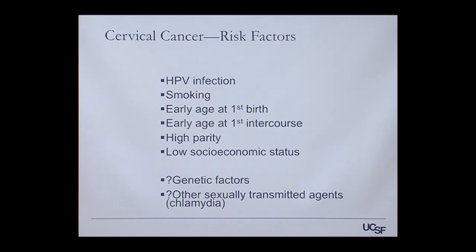High parity — the number of babies you've had — is a risk factor: women who've had four or more babies are significantly more likely to develop cervical cancer. Low socioeconomic status is an independent predictor. Genetic factors are a question mark — there are families where people every generation have had cervical cancer, but identifying a genetic predictor is difficult because HPV infection overwhelms the risk. HPV is found in every cervical cancer.